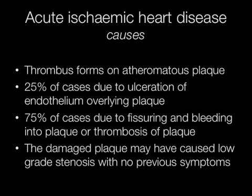Acute ischemic heart disease occurs when there is thrombosis of atheromatous plaques in coronary arteries. 25% of cases are due to ulceration of endothelium overlying the plaque, and 75% of cases are due to fissuring and bleeding into the plaque or thrombosis of the plaque.